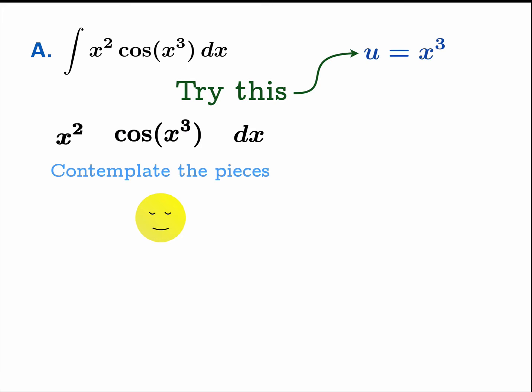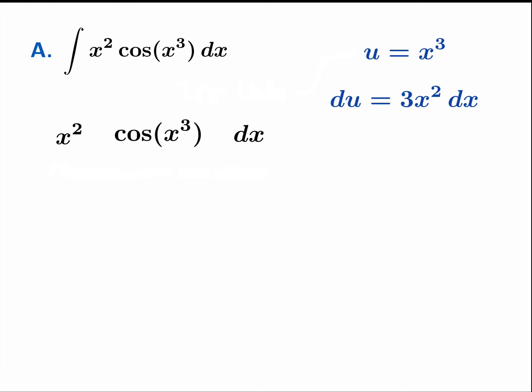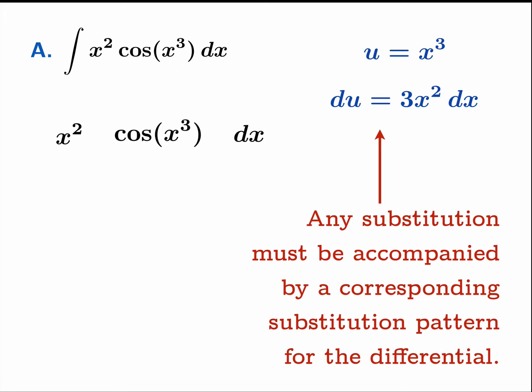Why does this work? Well, let's just see the example play out, and then you'll get a sense of what cues you'll be looking for to inspire you to figure out a possible substitution. So if u equals x cubed, du equals 3x squared dx. And the thing to keep in mind is that any substitution must be accompanied by a corresponding substitution pattern for the differential. Any time you write out what you think is a good substitution, your next step should be to calculate the differential, because you're going to need to substitute both the variable itself and the differential into the old integral to move forward.